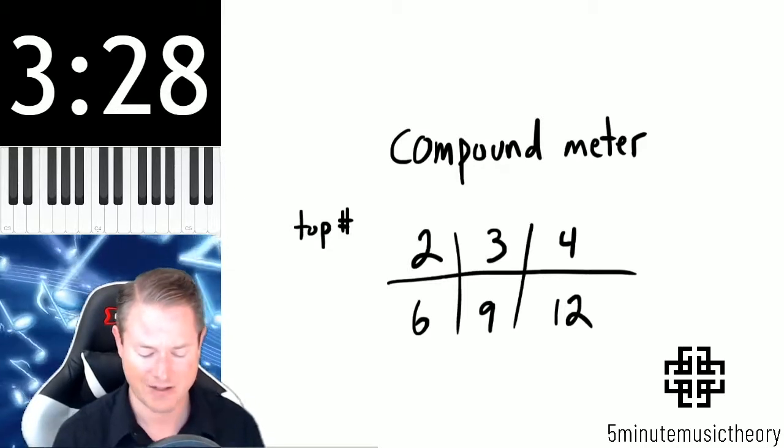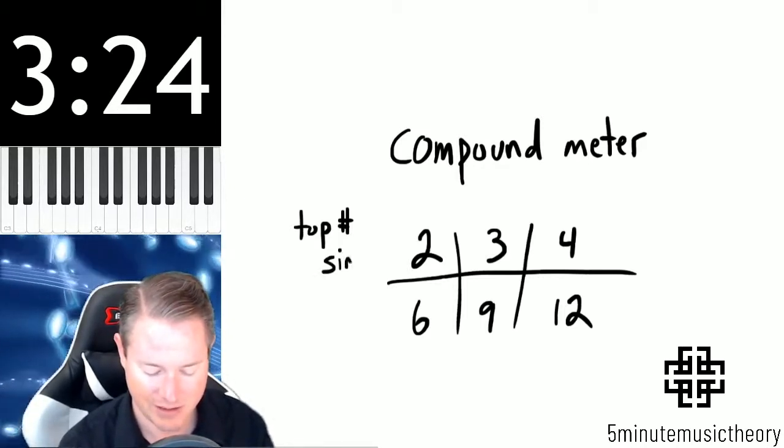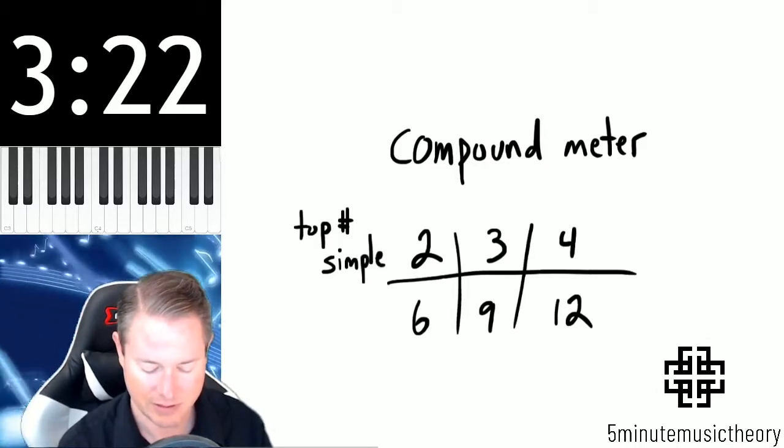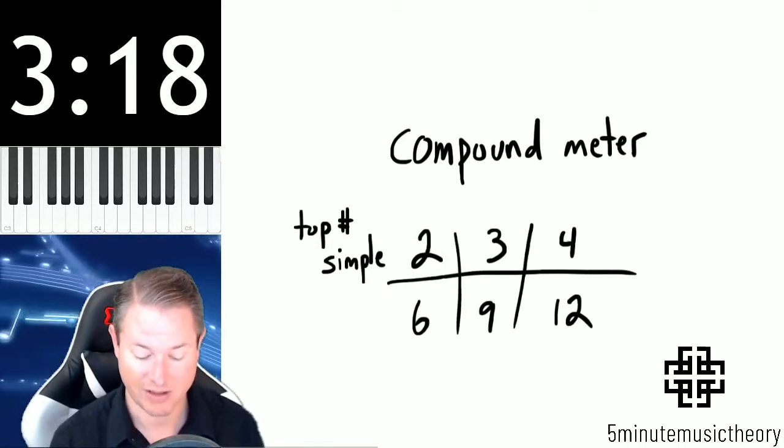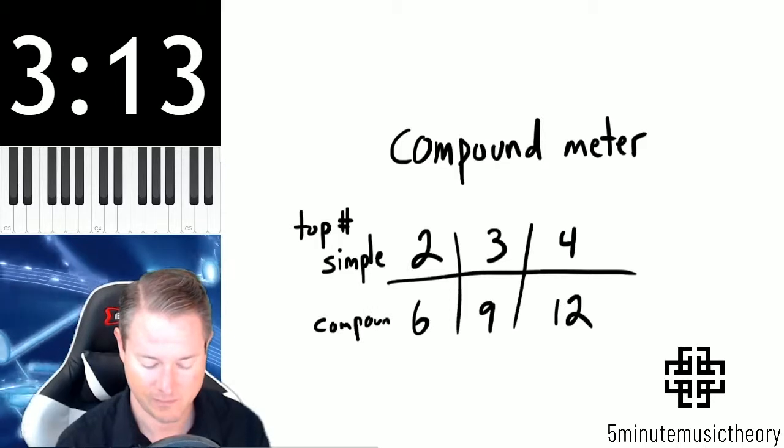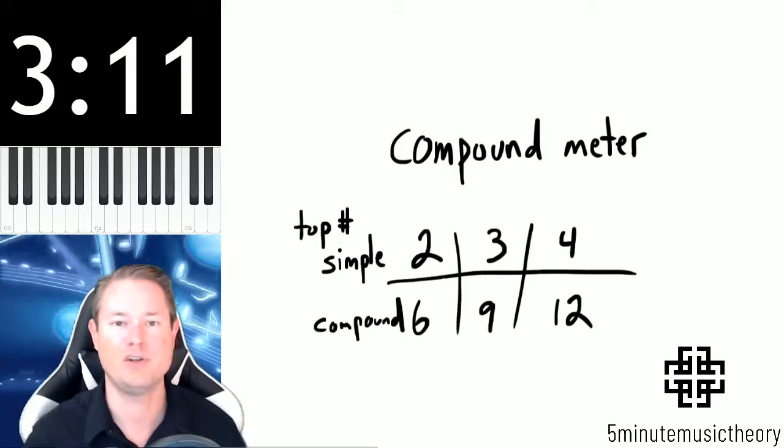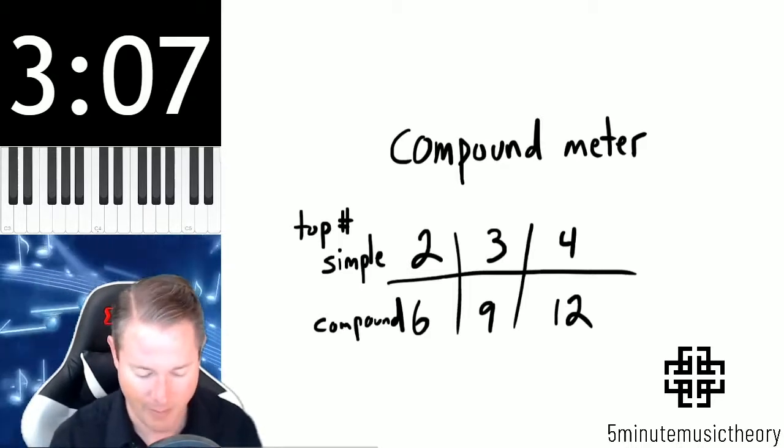So if we have a top number of 2, this is going to be simple meter. Or 3 is also simple meter. 4 is simple meter. And then on the bottom, compound. So if you have a 2, 3, or 4 on top, then it's simple. 6, 9, or 12 is compound.